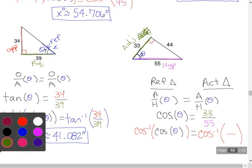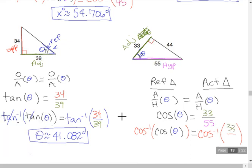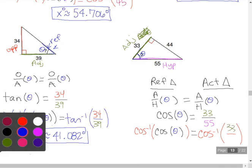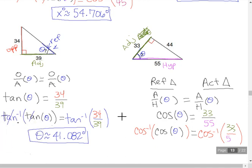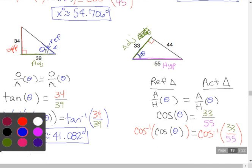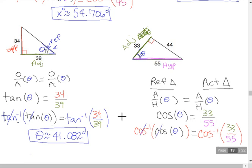I'll have to find the inverse cosine of 33 divided by 55. By rule, cosines cancel, I just have the angle left. Let's find the inverse cosine of 33 divided by 55, second cosine, and so I have 53.130 degrees.